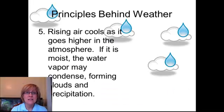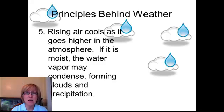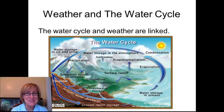In addition, the rising air cools as it gets higher in altitude, and this cooler air can't hold as much water. So if it is a moist air mass, that water starts to condense out into clouds and possibly precipitation. I didn't say rain because sometimes it snows.